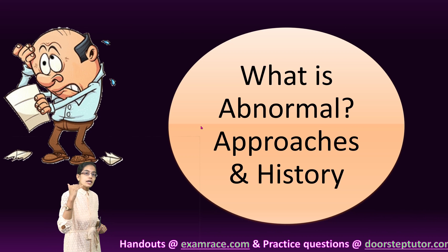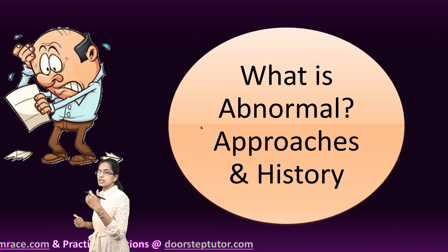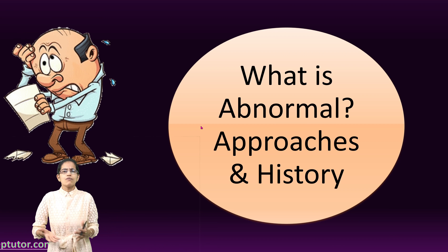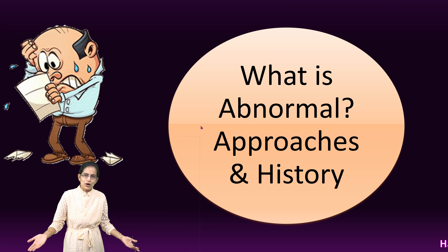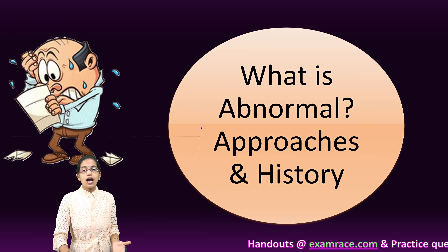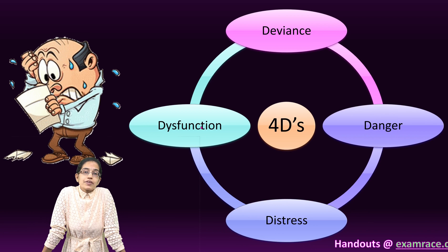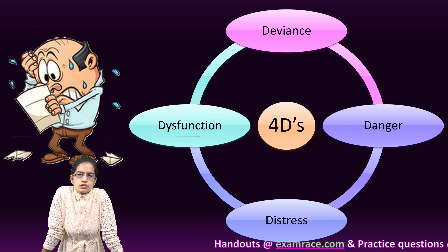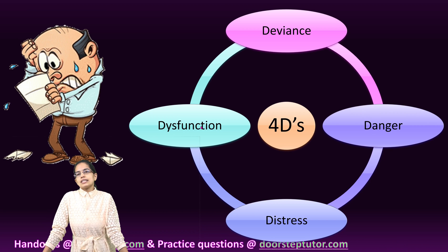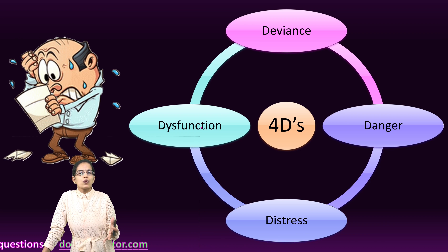What causes abnormality, or what is abnormal? We would understand the processes, the approach, and the history behind this concept of abnormality. Whatever is not normal is abnormal, simply put. In broad terms, there are the 4Ds — deviance, danger, distress, and dysfunction. Wherever these 4Ds come into action, normality converts into abnormality.